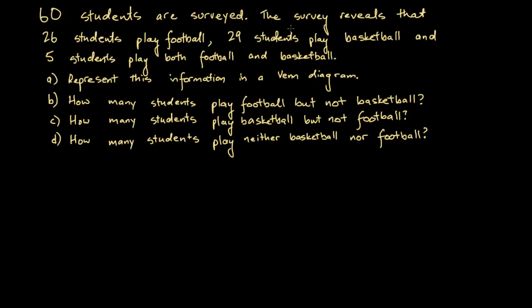60 students are surveyed. The survey reveals that 26 students play football, 29 students play basketball, and 5 students play both football and basketball. We're asked 4 questions: represent this information in a Venn diagram, how many students play football but not basketball, how many play basketball but not football, and how many play neither basketball nor football.